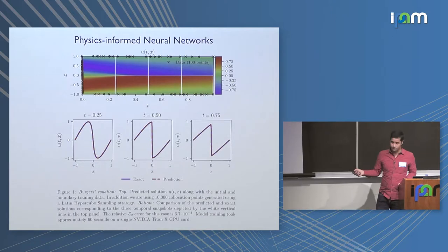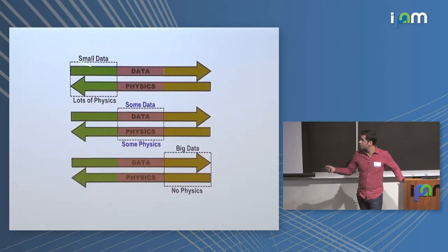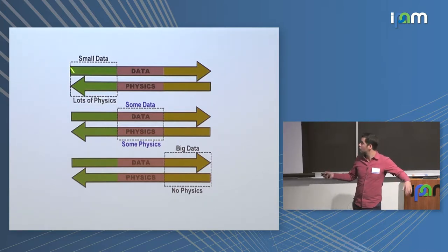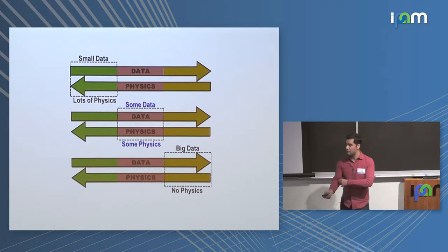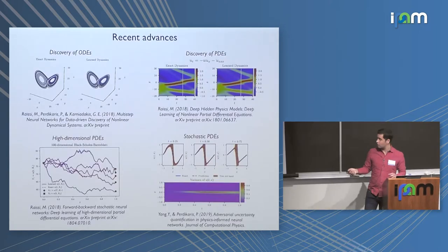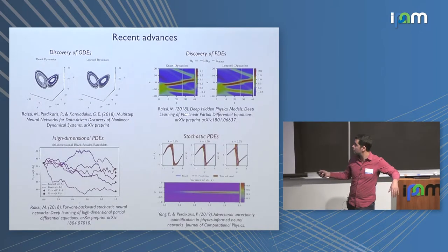Physics-informed neural networks as a framework are quite flexible. You can operate in a regime where you know the equation precisely with a small amount of boundary condition data and reconstruct the solution. But there are other interesting regimes — for instance, where you have intuition about the physics but are missing a closure term or have unknown parameters, yet have a bit more data, and you can still use the same framework to reconstruct the solution and infer unknown parameters. There's also the big data regime where you may not know any of the physics and are trying to recover mechanistic models directly from data.